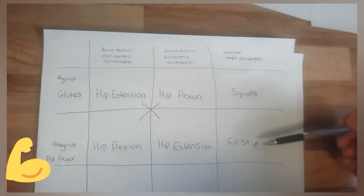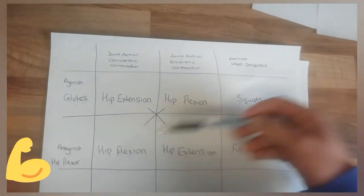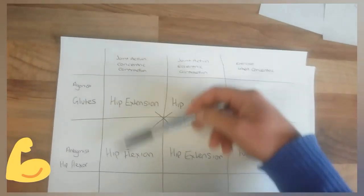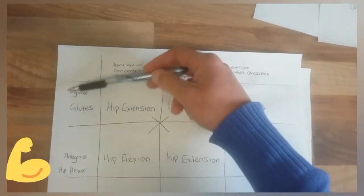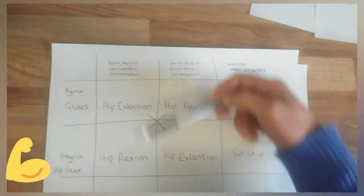You hinge straight from the hips and it pulls the femur towards the pelvis. So you end up with a full hip flexion as the antagonist for the agonist, which is glute hip extension.